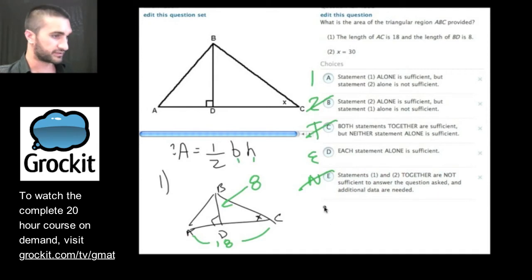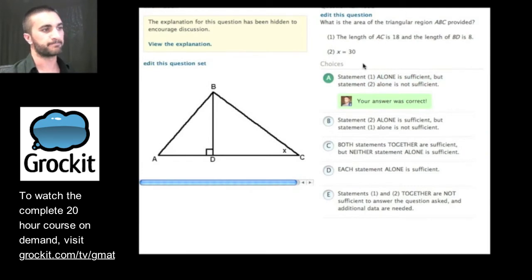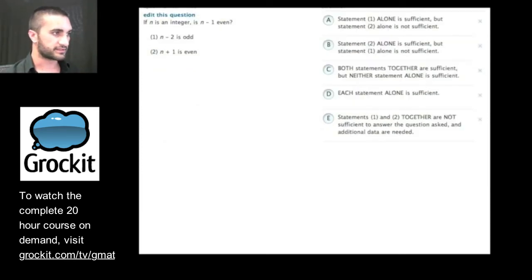Let's test out 2. Statement 2 says x equals 30. So they basically just give us the value of this number here. I don't know any of this. And I'm supposed to get the area from just this. I don't think it's possible. It should be A. Let's hope we're right. Nice. So in this situation, just knowing the area of this one angle is not enough to tell us the area of the whole triangle. But when they gave us the base and they gave us the height, that was enough. Great.